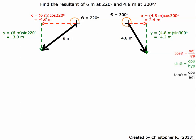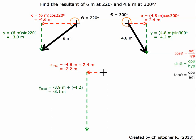Now we're going to add up the two x's and add up the two y's. When we add up the two x's, negative 4.6 plus 2.4 gives us negative 2.2, which means it's going in the left direction. Adding up the two y's, negative 3.9 plus negative 4.2 gives us negative 8.1 — again negative, so we're going in the down direction.